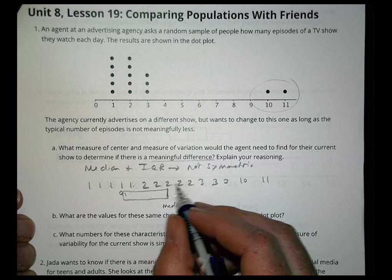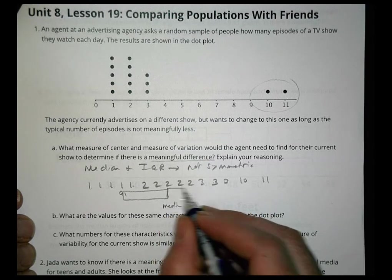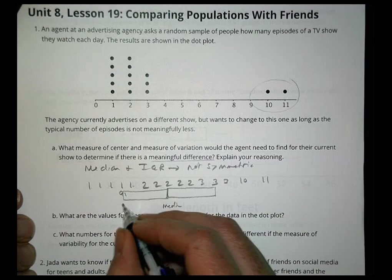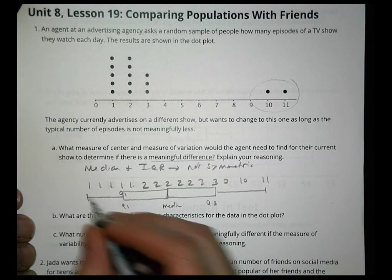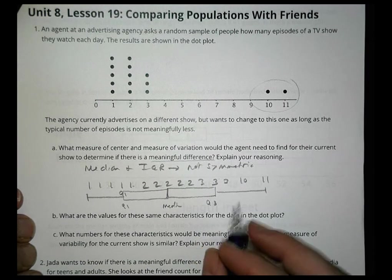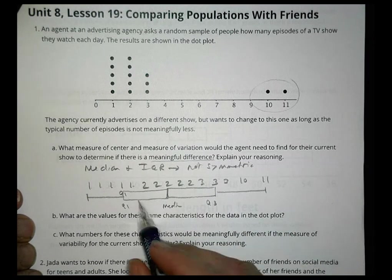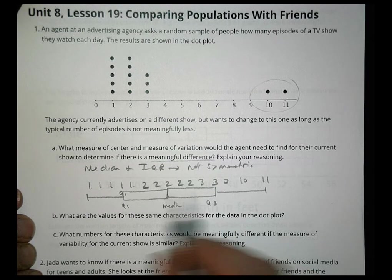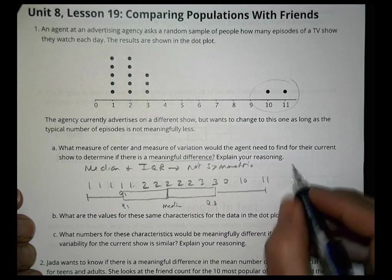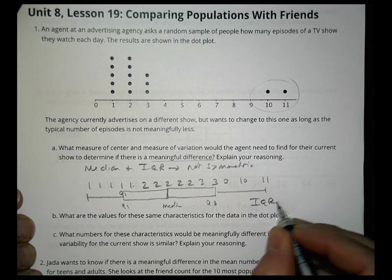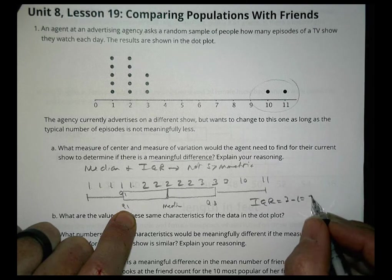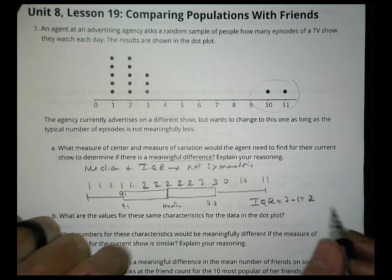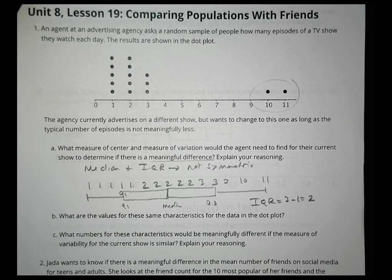Finding the quartiles: Q1 is at position 4 and Q3 is at position 4 from the upper end. Q1 = 1 and Q3 = 3. The IQR = Q3 − Q1 = 3 − 1 = 2. Most data falls within that range, with the exception of the values 10 and 11.